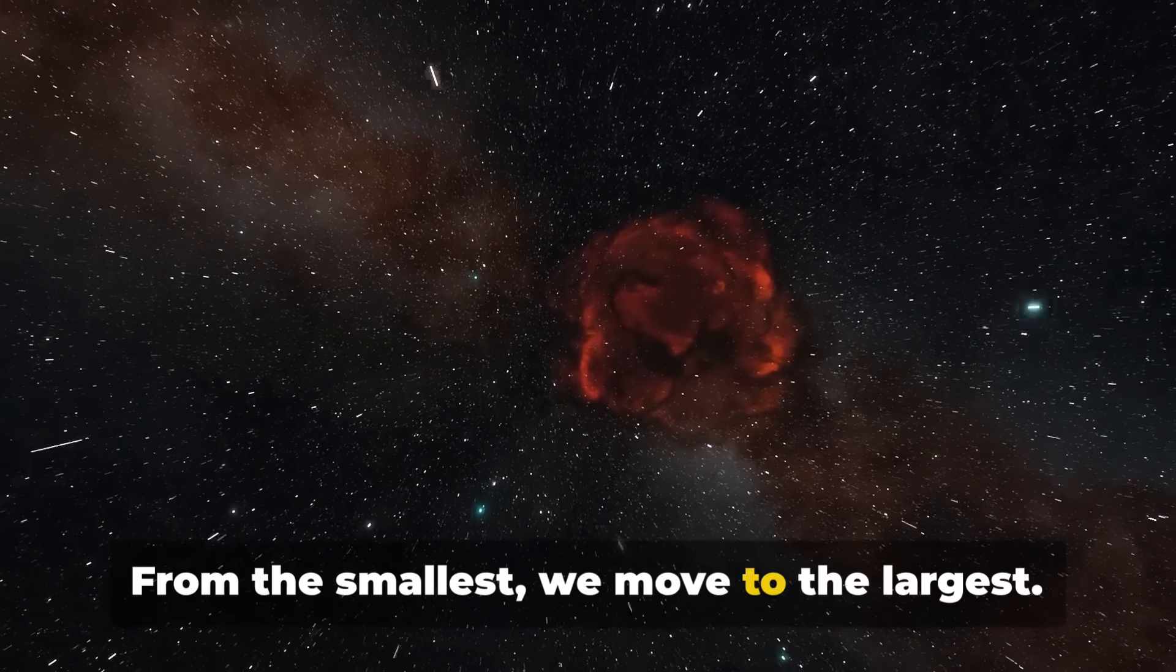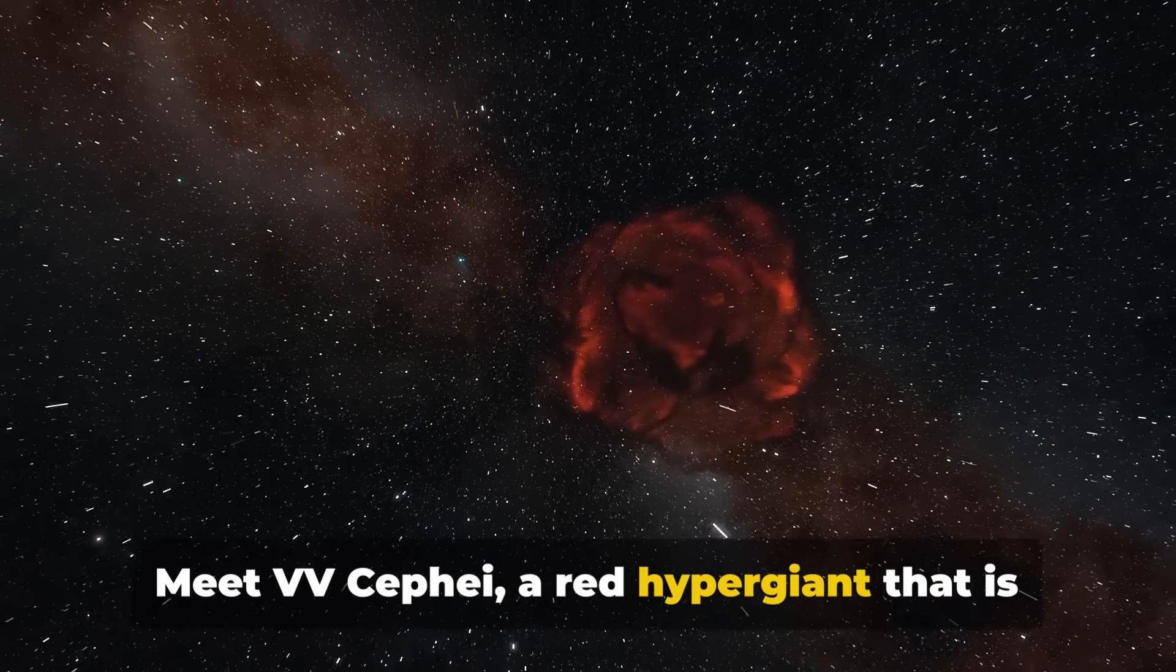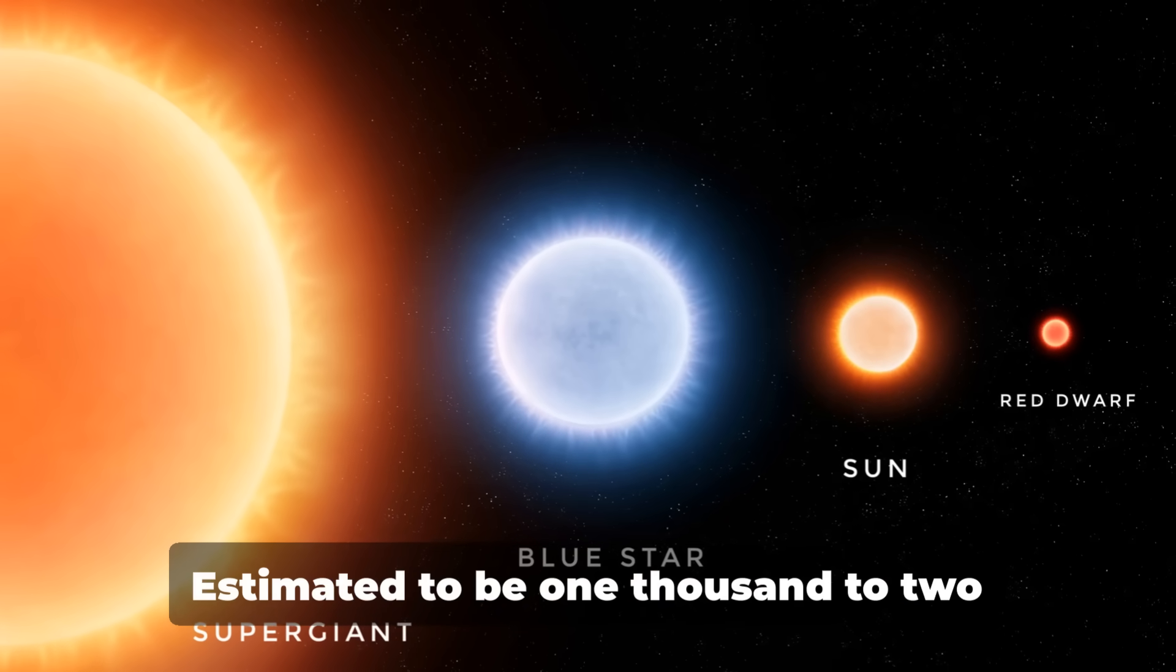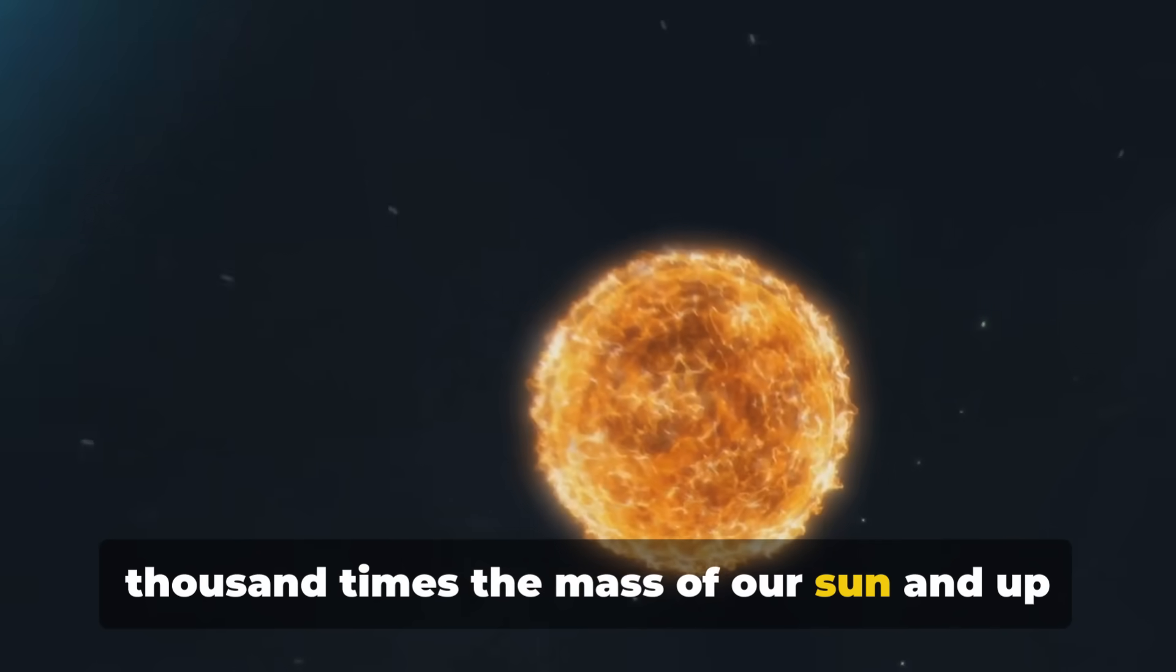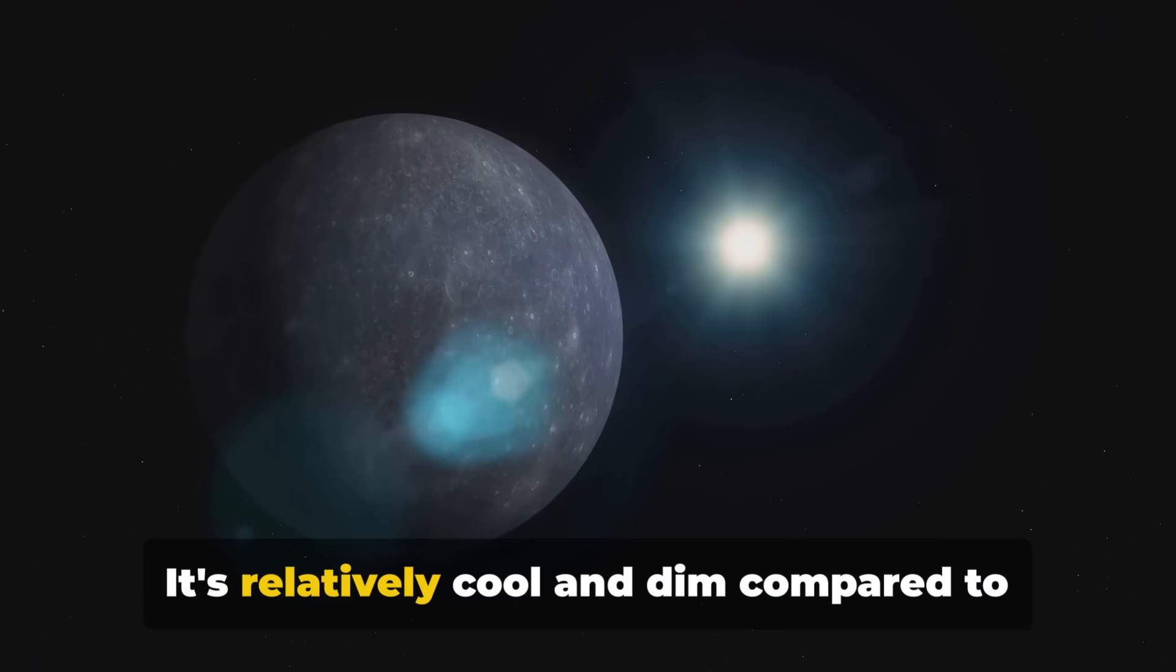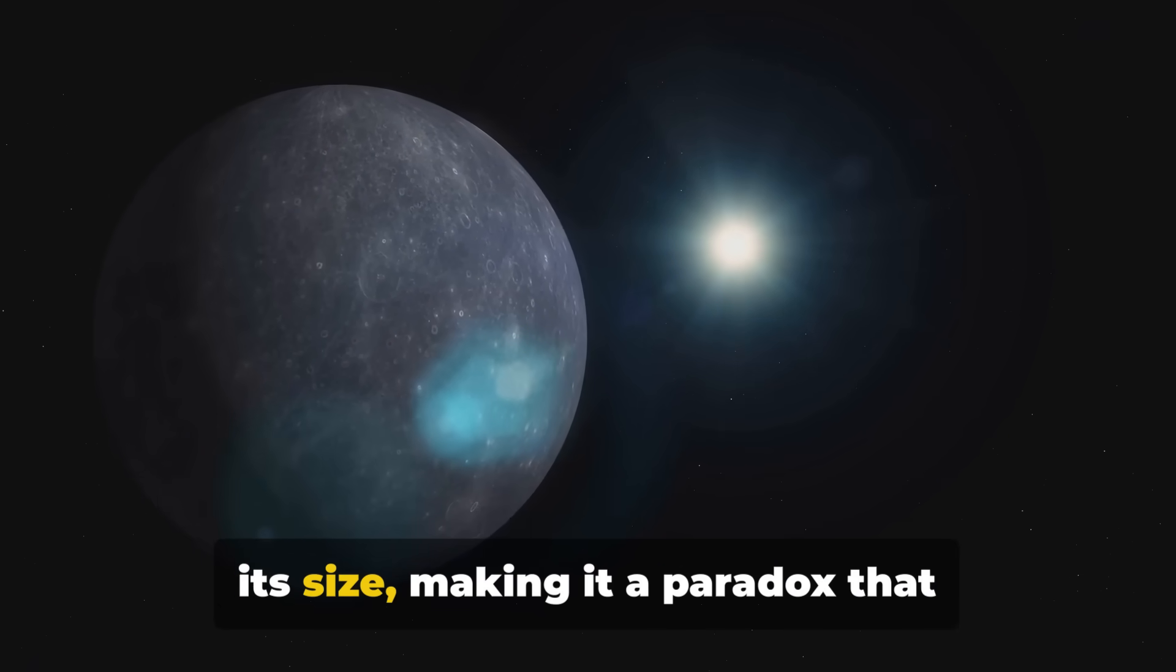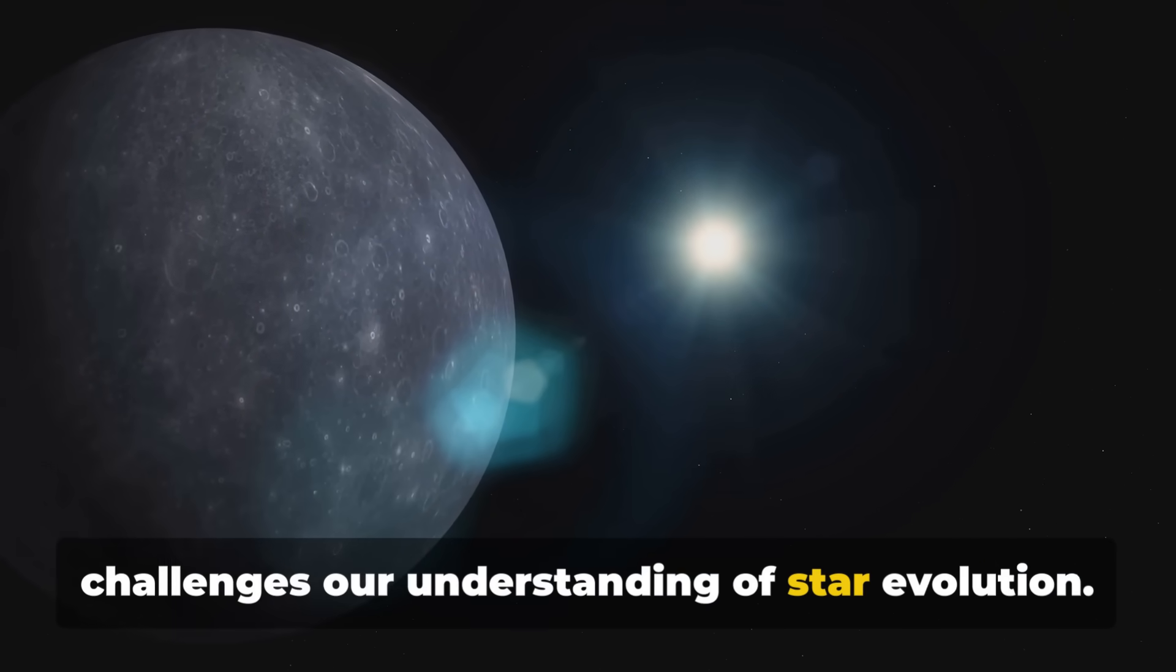From the smallest, we move to the largest. Meet Vivi Kefi, a red hypergiant that is an absolute behemoth, estimated to be 1000 to 2000 times the mass of our sun and up to 2100 times wider. It's relatively cool and dim compared to its size, making it a paradox that challenges our understanding of star evolution.